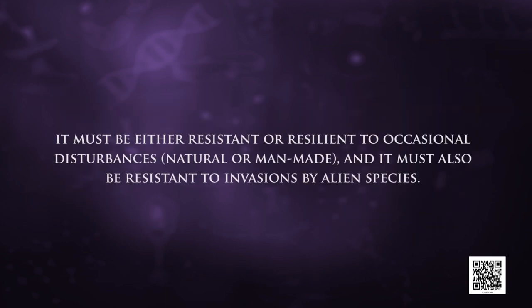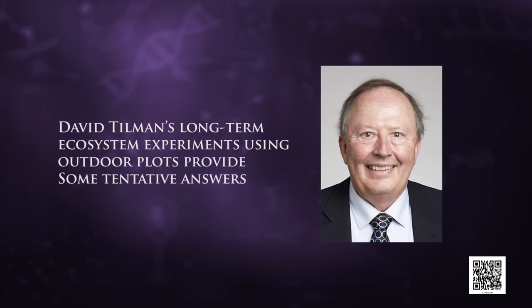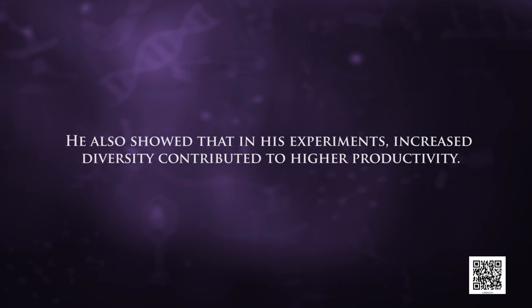A stable community must be either resistant or resilient to occasional disturbances — natural or man-made — and must also be resistant to invasion by alien species. David Tilman's long-term ecosystem experiments using outdoor plots provide some tentative answers. Tilman found that plots with more species showed less year-to-year variation in total biomass, and that increased diversity contributed to higher productivity.